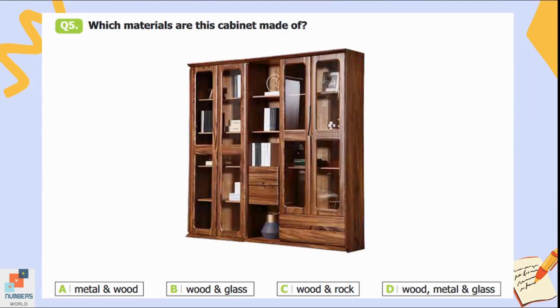Question number five: Which materials is this cabinet made of? Option A is metal and wood, B is wood and glass, C is wood and rock, and D is wood, metal, and glass. We can see the cabinet is made of wood and glass, but screws or nails are used to attach different parts of the wood to make this cabinet, so option D is the correct answer. This cabinet is made of wood, metal screws or nails, and glass.